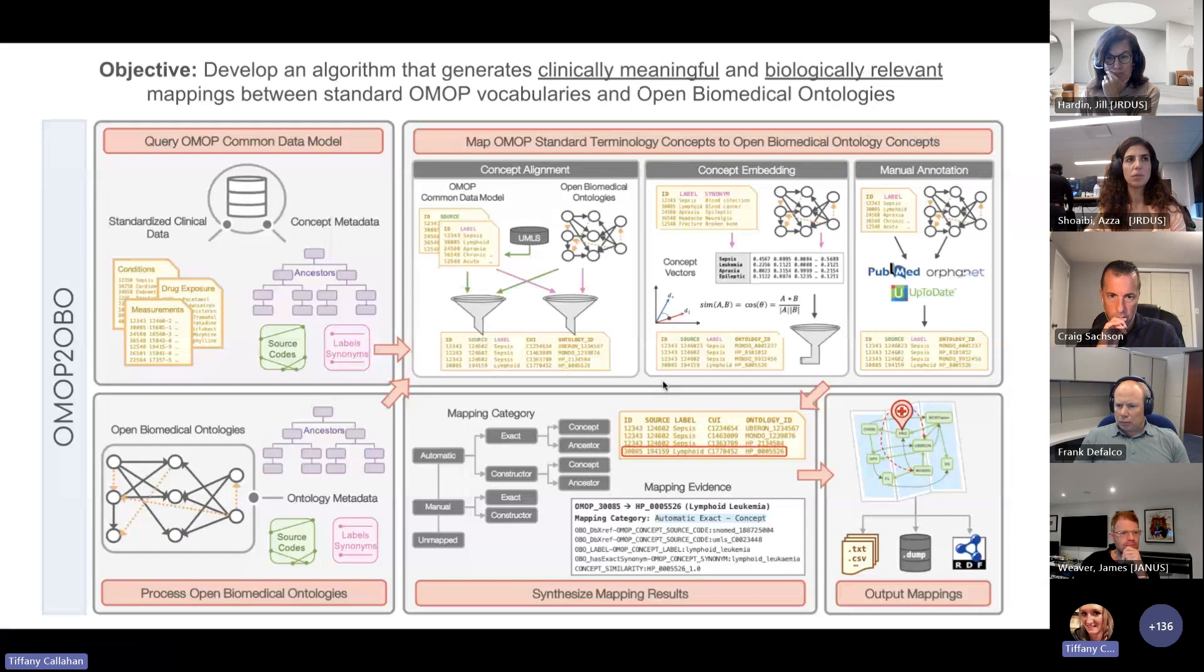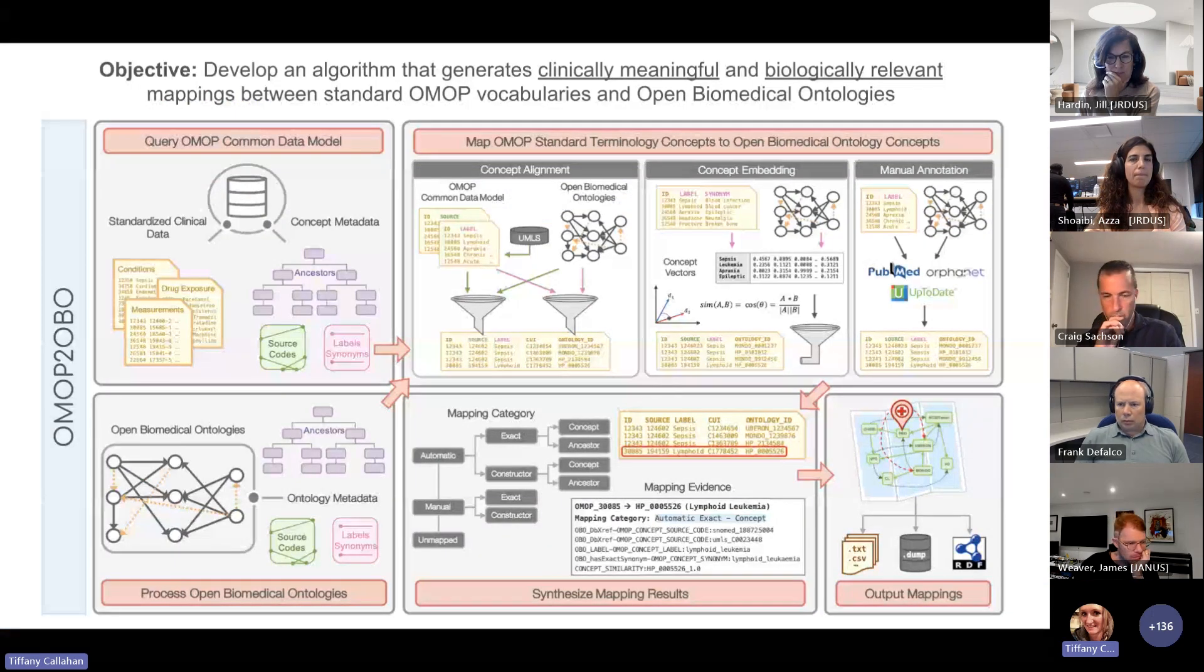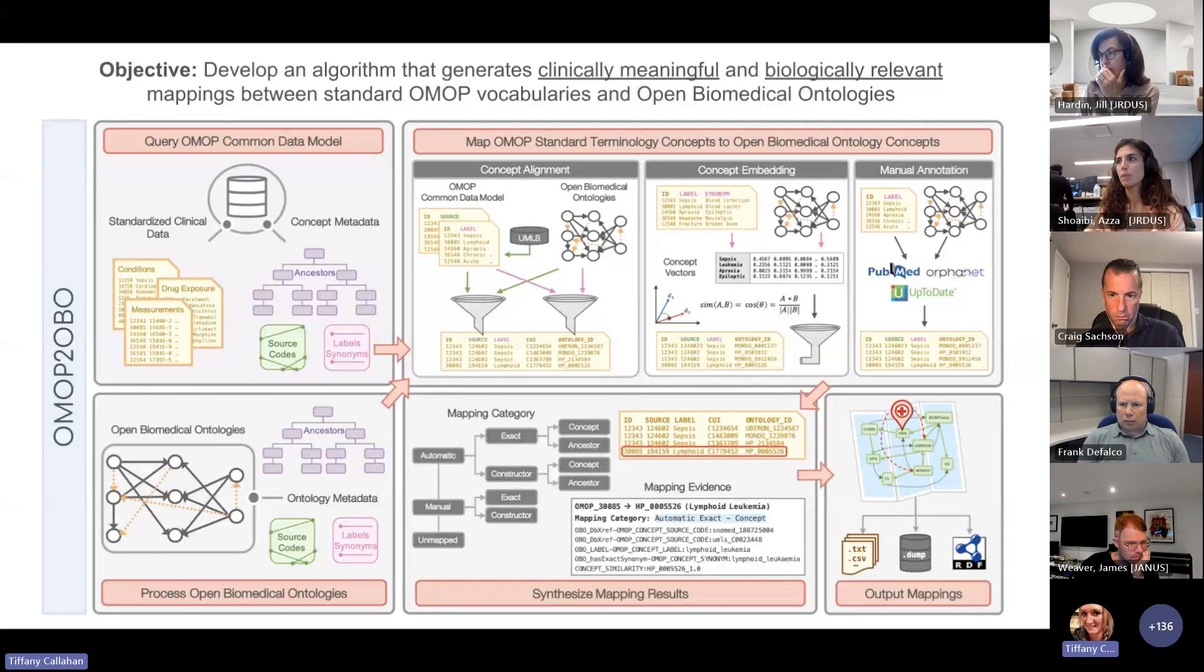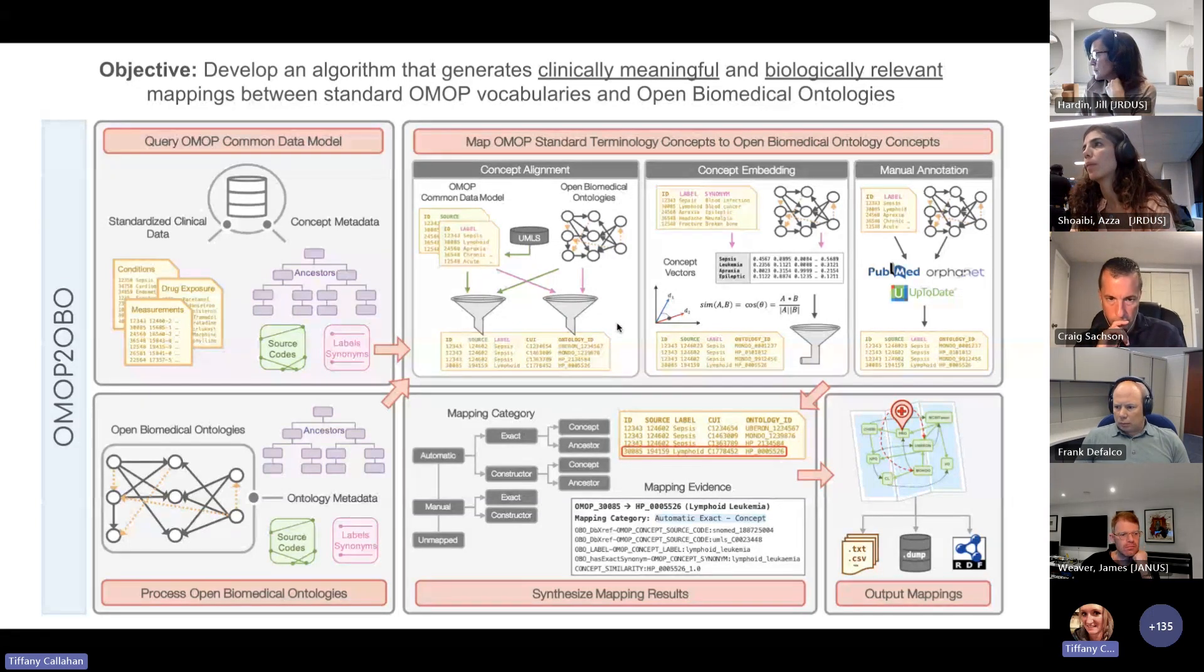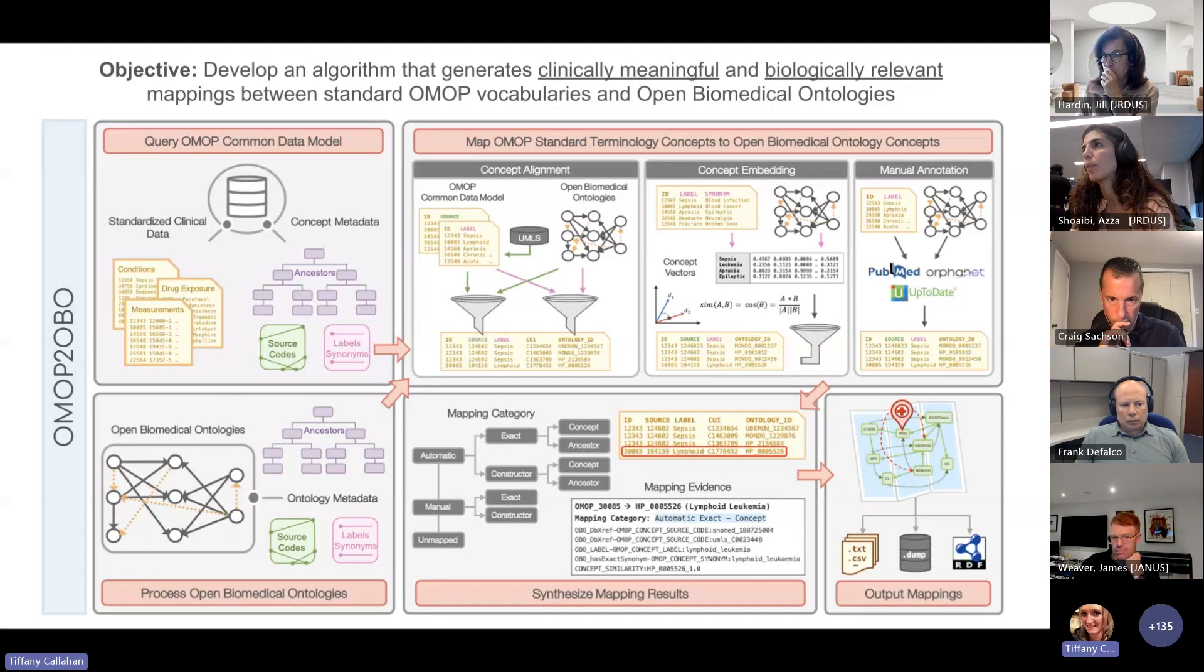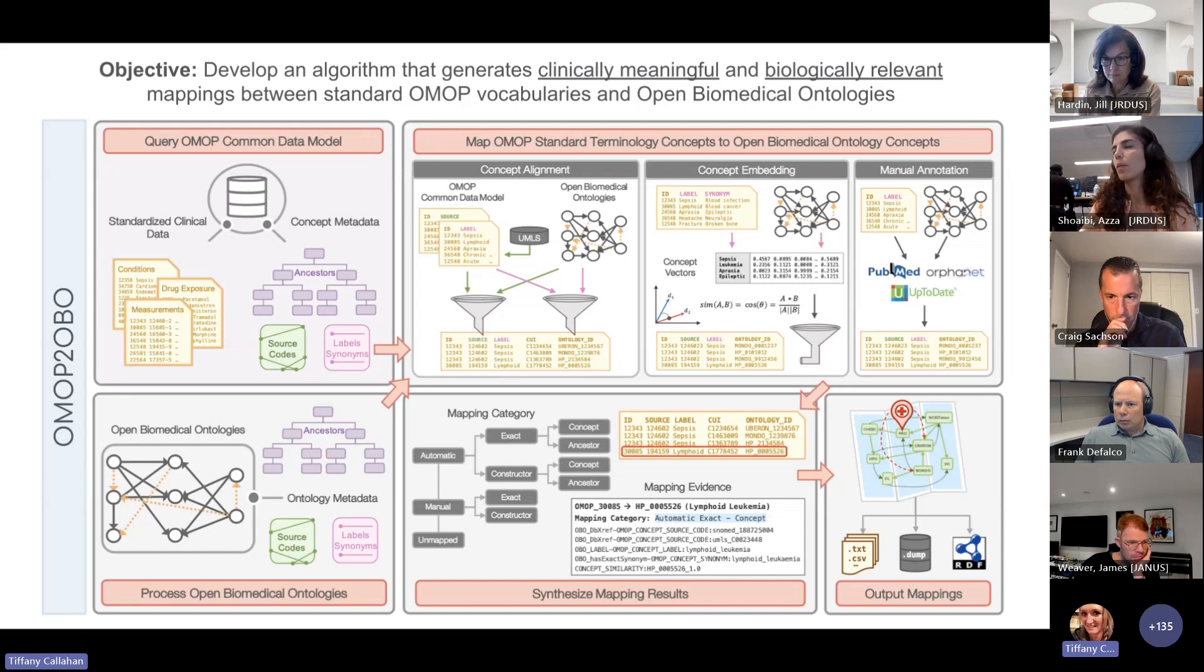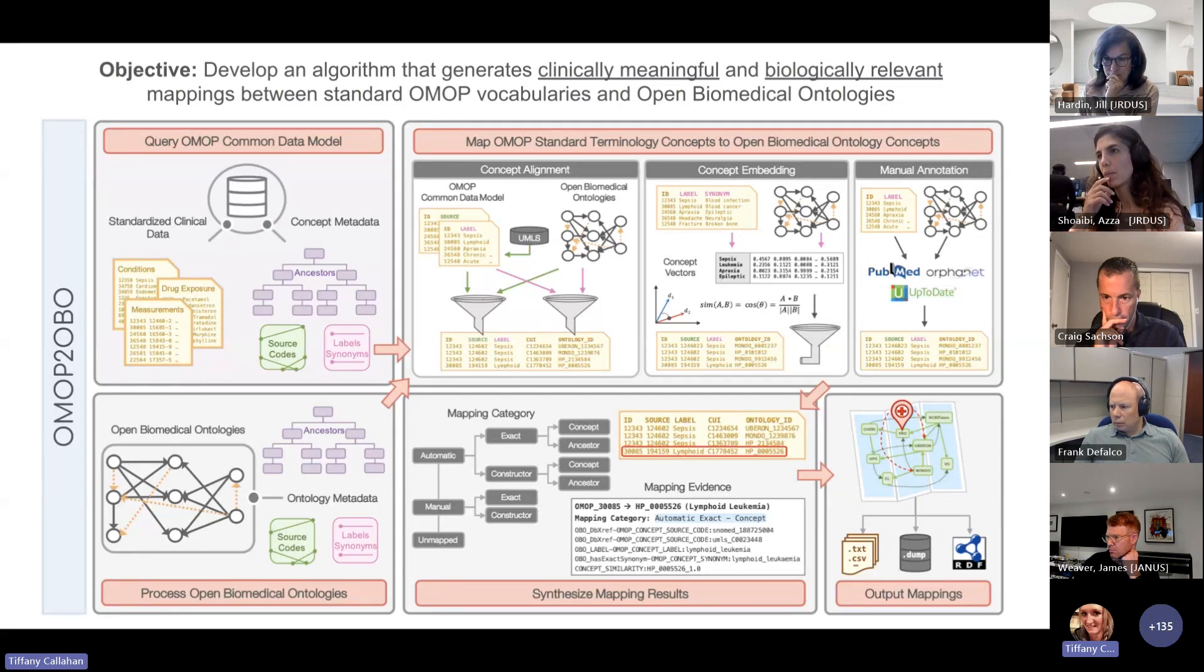The goal of the work that is summarized in the paper was to develop a system that's capable of generating mappings between standard OMOP vocabularies and the OBO Foundry Ontologies. The figure on this slide is really meant to provide a high-level roadmap of the system that we developed, which we called OMOP to OBO. To be brief, the system obtains concepts and metadata from both OMOP and OBO Foundry Ontologies. It tries to obtain a mapping first by directly aligning concept code and strings, and then leverages concept embeddings to match concepts using things like labels and synonyms. Finally, if a match is unable to be obtained from the prior approaches, it can process manually created mappings.